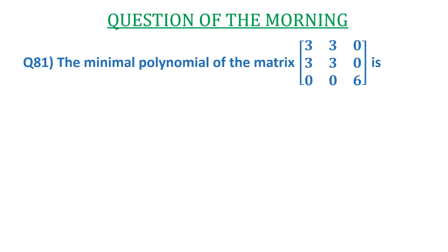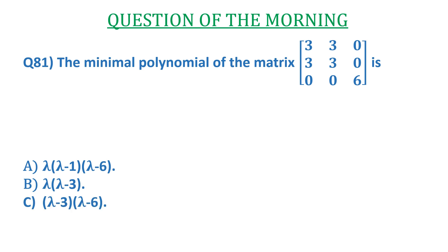In this video we are going to discuss a question of linear algebra: find the minimal polynomial of the matrix [3,3,0; 3,3,0; 0,0,6]. The options are: (a) λ(λ−1)(λ−6), (b) λ(λ−3), (c) (λ−3)(λ−6), and (d) λ(λ−6).